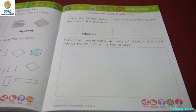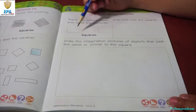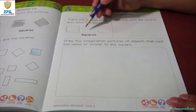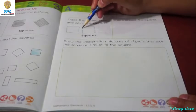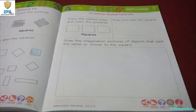Creative quadrilaterals. Trace the dotted lines and color the pictures. Let's trace the squares. And let's color it after.